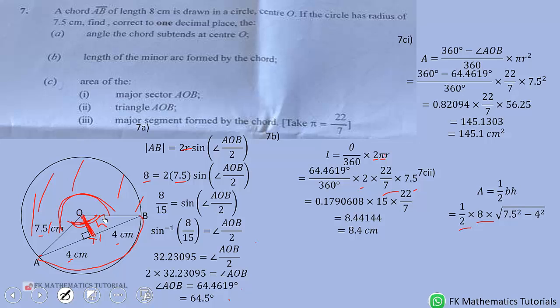What is h squared? So h squared plus 4 squared is equal to 7.5 squared. So we solve for h to get square root of 7.5 squared minus 4 squared, which is 6.34429. So we multiply it by 4 to get 25.4 centimeters squared. That is the area of the triangle AOB.